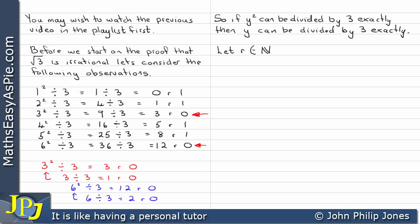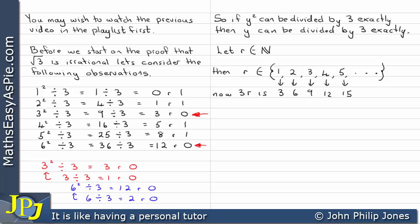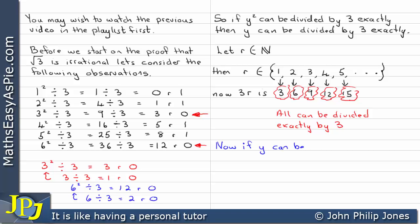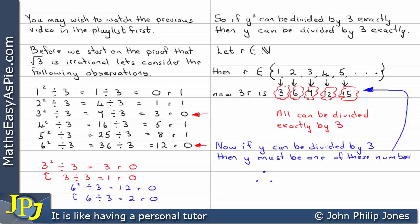Let r belong to the natural number set. Then we can write r as belonging to {1, 2, 3, 4, 5, ...}. If we look at 3r, we get 3, 6, 9, 12, 15, and so on — all numbers that can be divided exactly by 3. So if y can be divided exactly by 3, then y must be one of these numbers, and therefore y equals 3r.